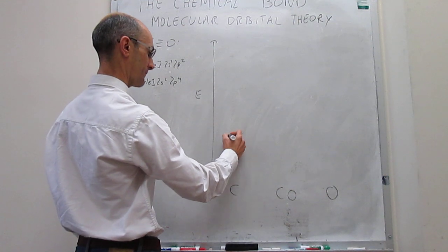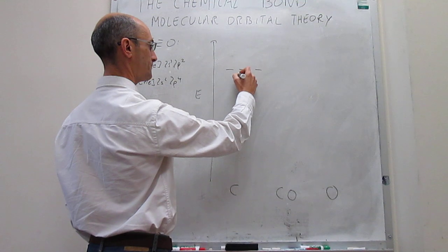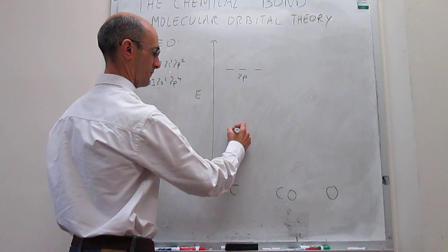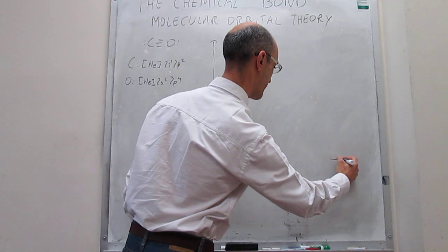Carbon, we'll look at the electronic structure, is going to be 2s and then your 2p's. And then oxygen, we'll put here the electrons, and then oxygen is going to be 2s2 2p4.